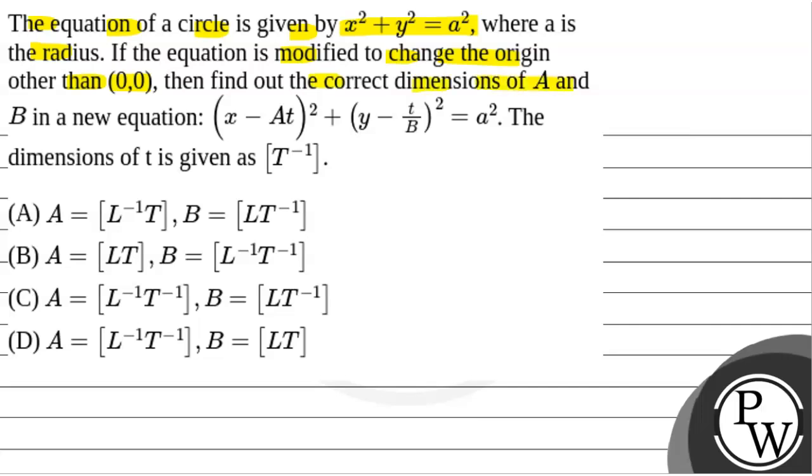then find the correct dimensions of A and B in the new equation: (x - At)² + (y - t/B)² = a². The dimensions of t is given as [T⁻¹].